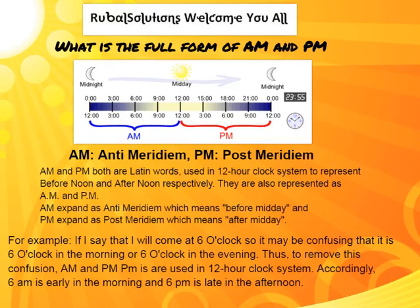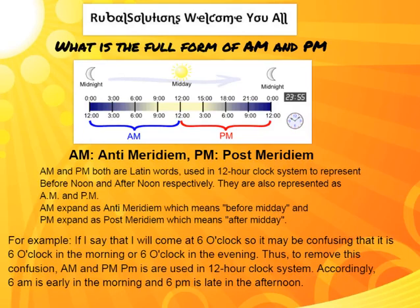AM means ante-meridiem and PM means post-meridiem. AM and PM are both Latin words used in the 12-hour clock system to represent before noon and after noon respectively. AM expands as ante-meridiem which means before midday, and PM expands as post-meridiem which means after midday.